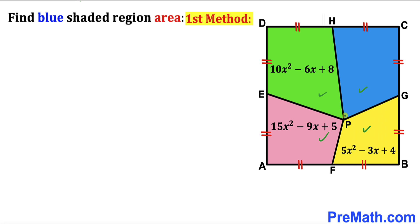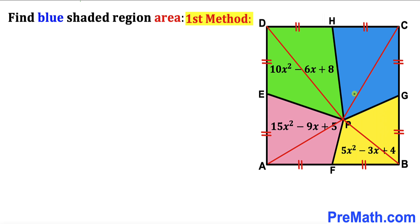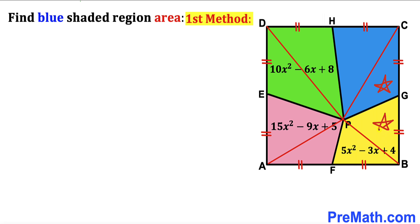I am going to connect all the vertices A, B, C, and D with point P, and as a result we get a set of triangles. Let's focus on the blue triangle, and the yellow triangle as well.